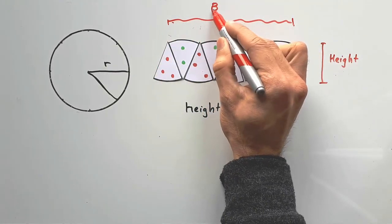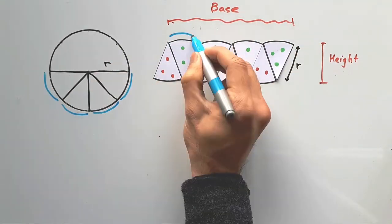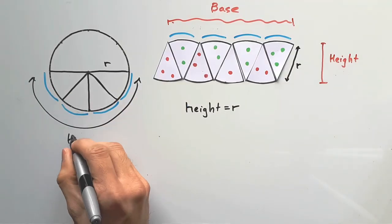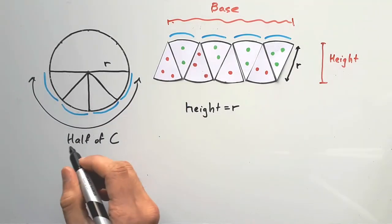As for the base of this rectangle, it's kinda curvy, right? These curves come from half our circle, so the base is just half the circumference.